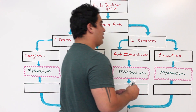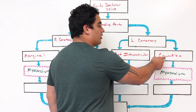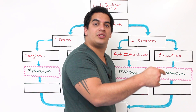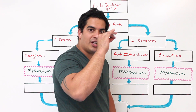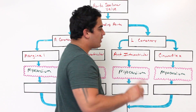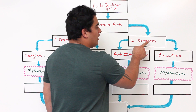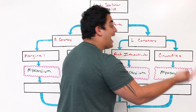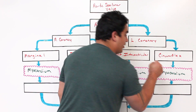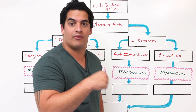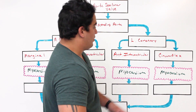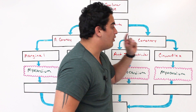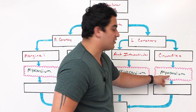If we want to be really specific, arteries like the circumflex branch into smaller vessels called arterioles, and from the arterioles they go into tiny exchange vessels called capillaries. So the left coronary artery goes into the circumflex artery, which goes into circumflex arterioles, which go into circumflex capillaries — and those capillaries are found in the myocardium of the heart.